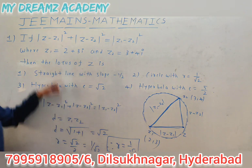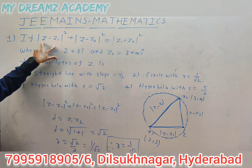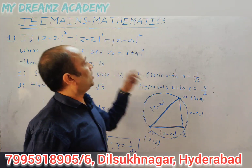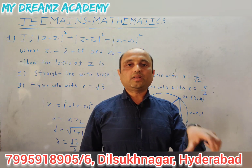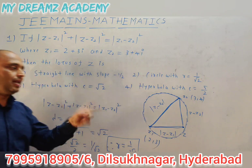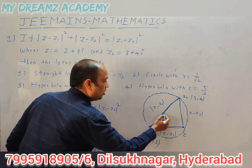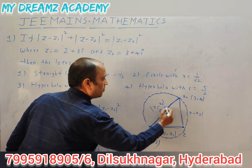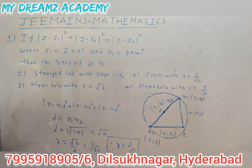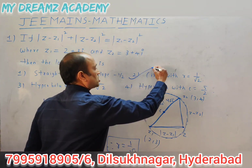Therefore, the equation |z - z1|² + |z - z2|² = |z1 - z2|² represents a circle with radius 1/√2. So the second option is true.